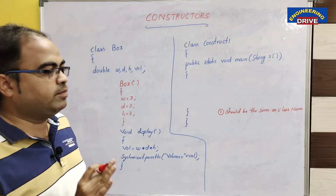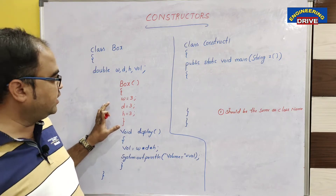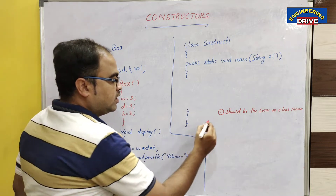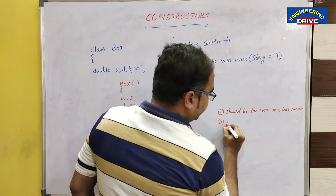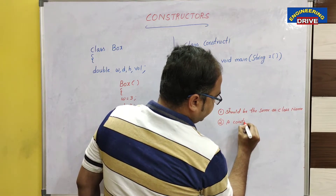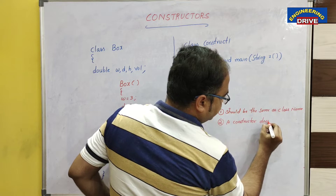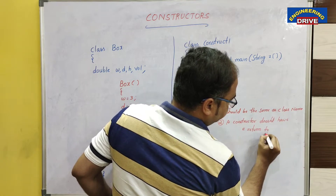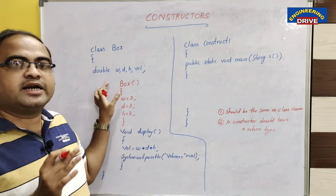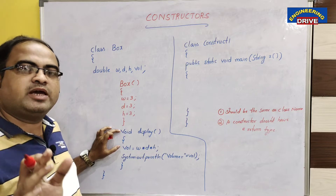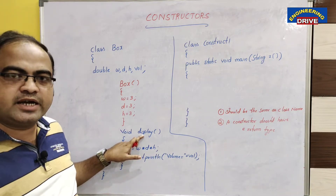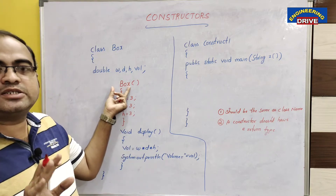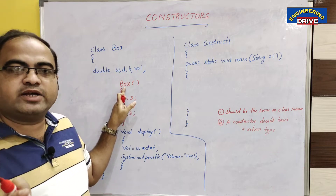The first quality of a constructor: the constructor name should be the same as the class name. If anybody asks you whether a constructor is present in the program or not, you can identify it by checking the name. The second point: a constructor does not have a return type — not even void. For any normal method in Java we use a return type, and if there is none, we use void. You can see the display method uses void. But a constructor has no return type at all.